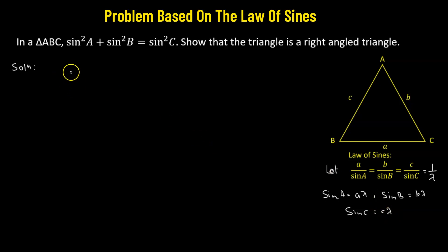So let's begin with our given condition. We are given that sine squared A plus sine squared B equals sine squared C. If we substitute the values, we're going to get a squared lambda squared plus b squared lambda squared equals c squared lambda squared.